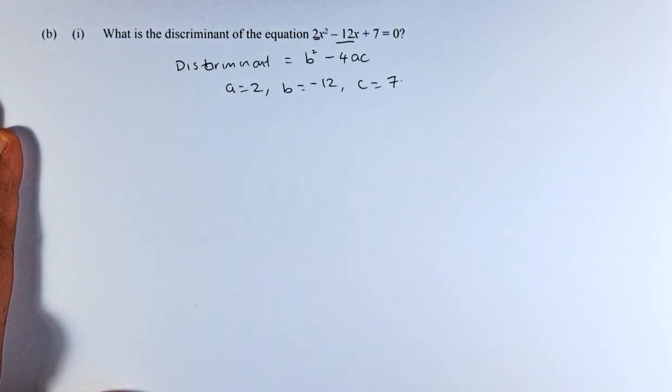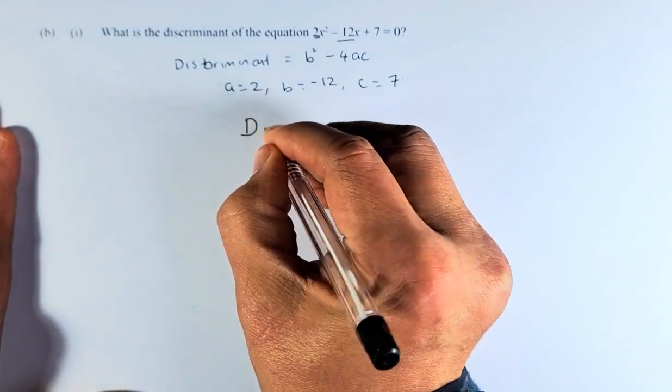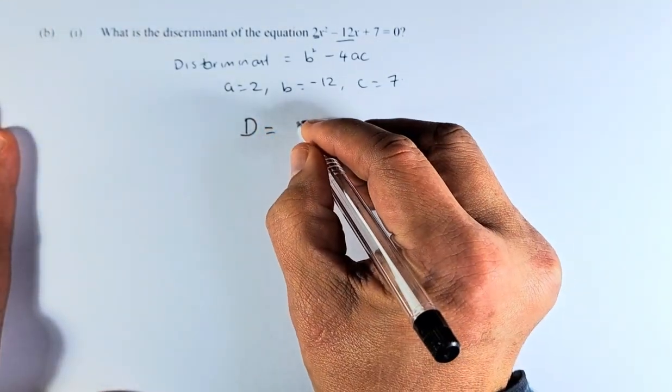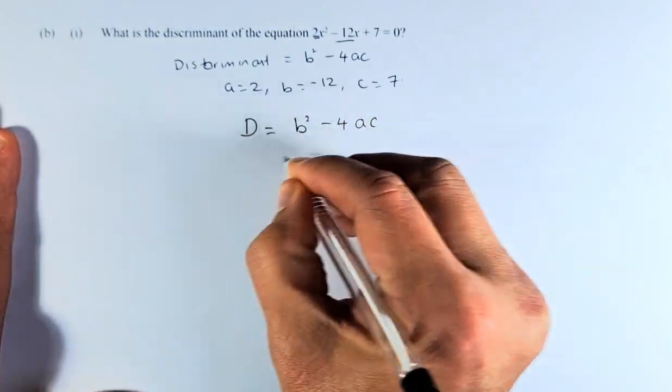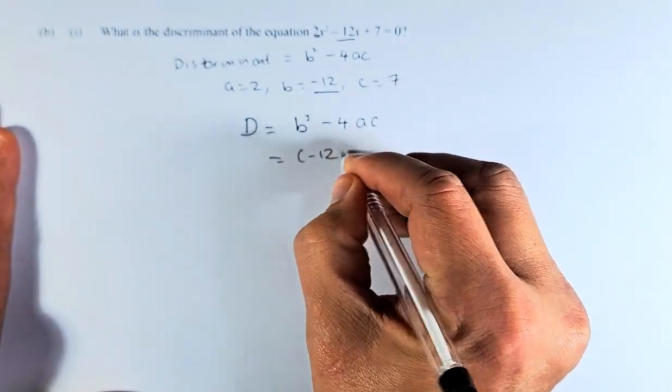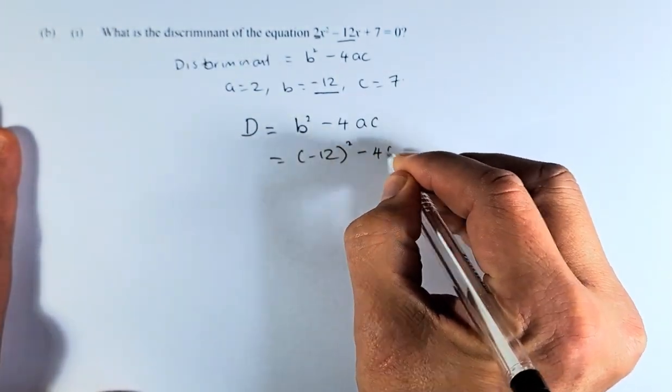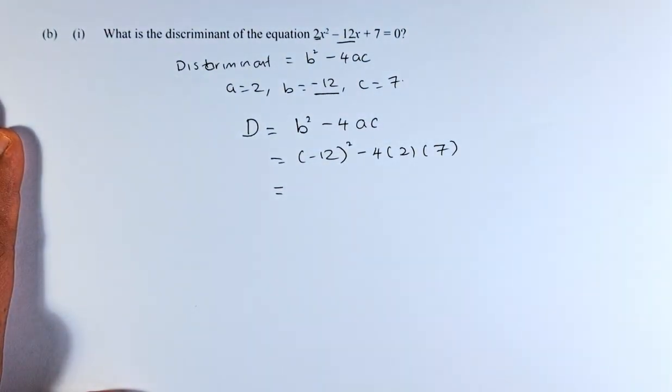So to calculate the discriminant, we need to use this formula, b² - 4ac. So we can put D or discriminant equal to b² - 4ac. So b squared is represented by -12, so (-12)² - 4(2)(7).